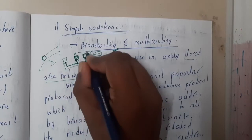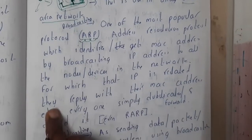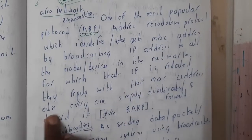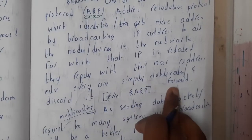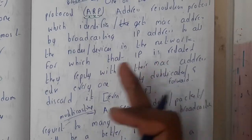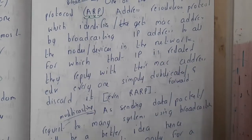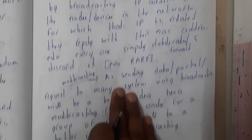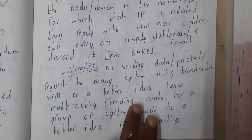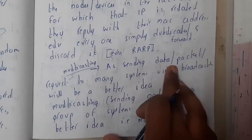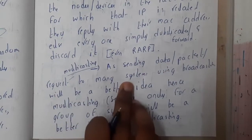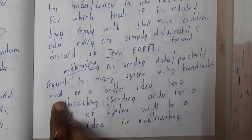Here it is the same, so it will be replying with its MAC address. This is the concept of ARP. They reply with their MAC address, else everyone simply duplicates and forwards. Basically, they need to forward it to the next layer also. This is about broadcasting. Similarly, in multicasting also we are having this concept.